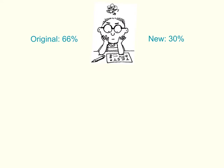In this example, Junior took a test and got a 66% on it. Good thing he has the nicest teacher in the world, who let him retake the test. However, Junior didn't study and did even worse, getting a 30%. What is the percent of change of his two test scores?